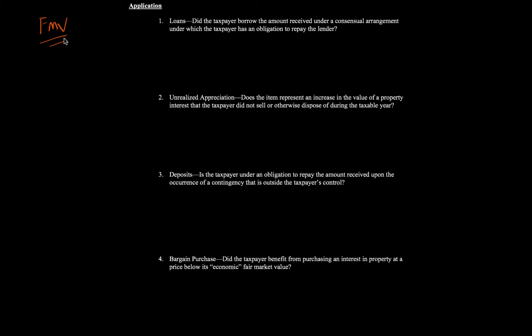The first general idea to consider is loans — a consensual arrangement under which the taxpayer has an obligation to repay the lender. With a genuine loan, we go through the three tests. Starting with accession to wealth: our assets go up because we're receiving loan proceeds, but our liabilities also go up. So the net amount is zero, and our net worth stays the same. Therefore, with respect to a loan, there's no gross income.